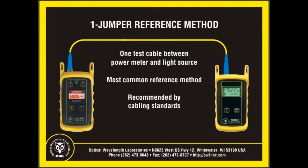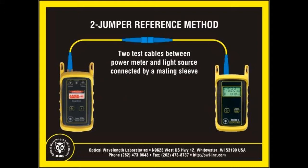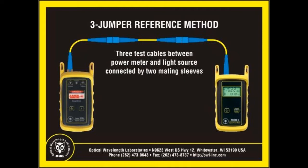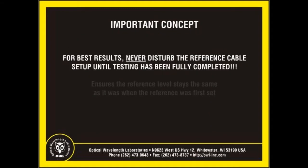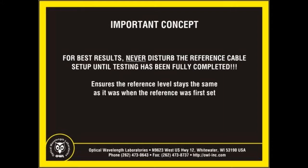The most common reference method is the one-jumper method, where one patch cable is inserted between the power meter and the light source. This method has become the recommended reference method in recent years. The two-jumper method uses two test cables, one for each tester, with a mating sleeve in the middle. The three-jumper method adds a third test cable and a second mating sleeve, where a third cable is inserted between the two reference cables attached to the testers. This is the least common of the three reference methods. For best results, never disturb the reference cable setup until testing has been fully completed. This ensures that the reference power coming out of the light source is the same as when the reference power was recorded in the power meter.